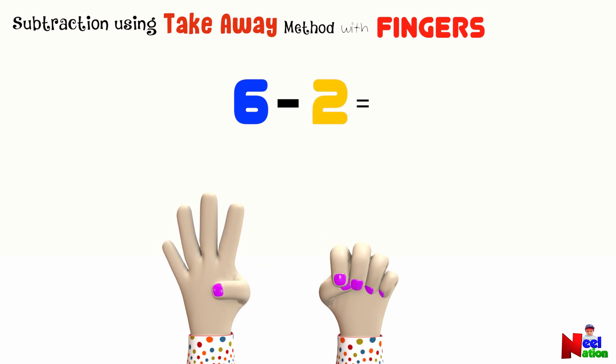So, how many fingers are left? One, two, three, four. We are left with four fingers. That means six minus two equals four. Here again, we are using the taking away method to do subtraction. Isn't that easy?